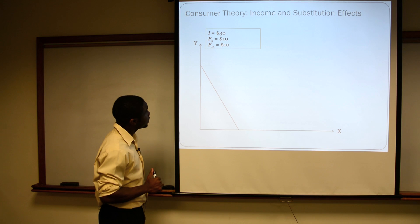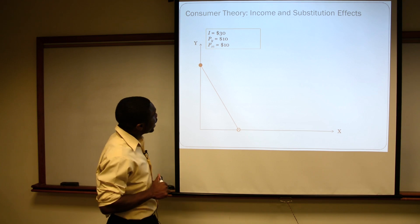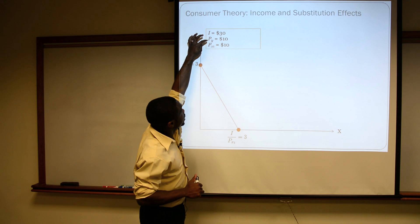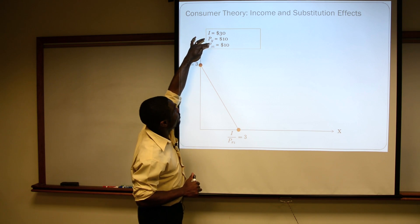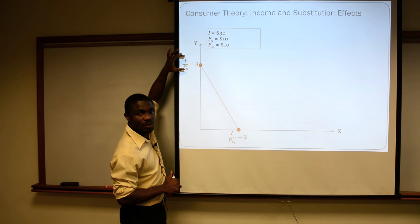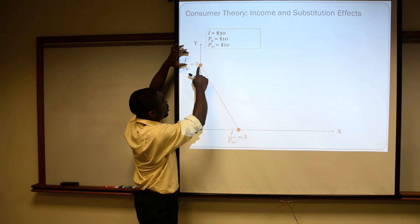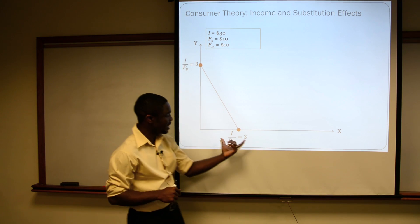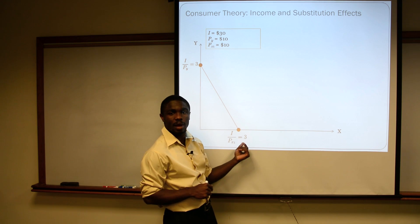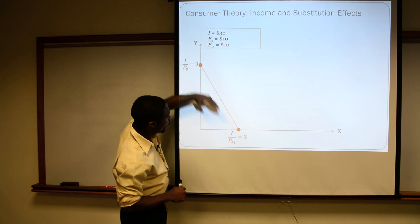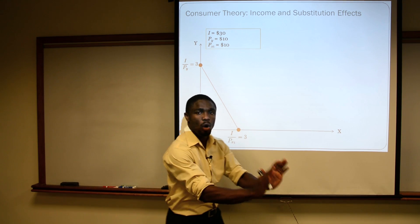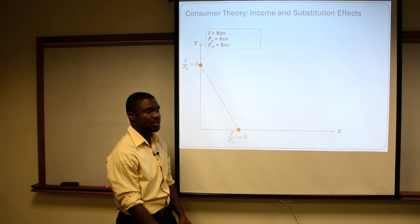So in this case, where we have income of 30, price of Y of 10 and price of X of 10, then these intercepts are just three and three. I spend the entirety of my income on Y, I get three units; spend the entirety of my income on X, I also can buy three units. And everywhere in between just says I'm spending all of my money on these goods.